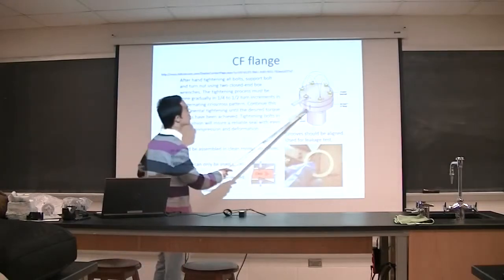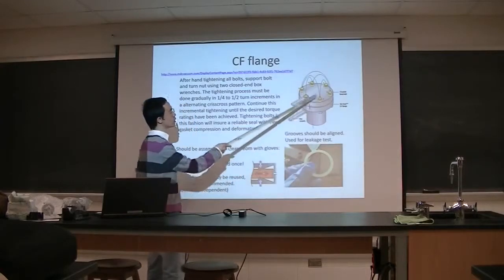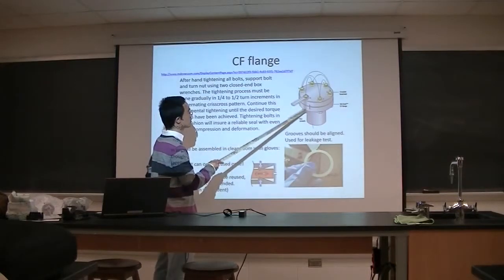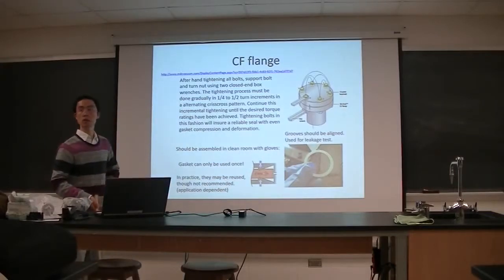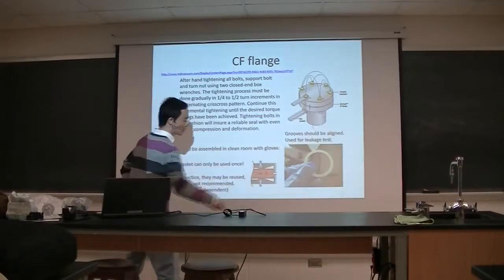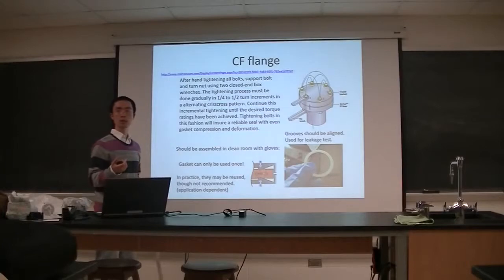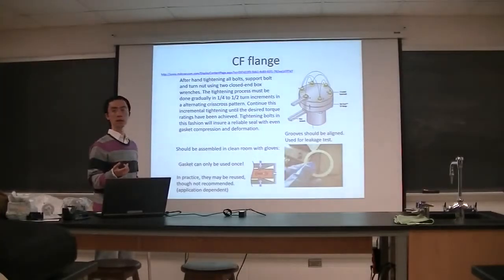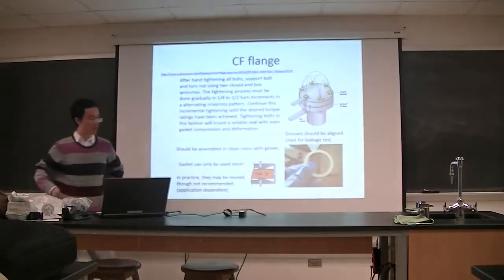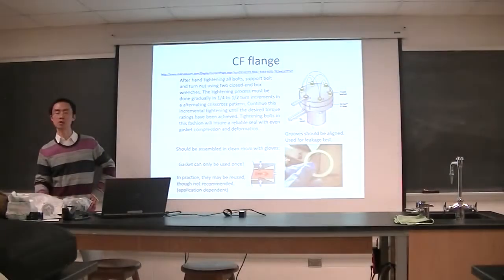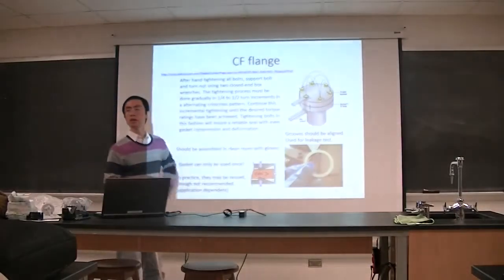There is a small groove on each side of the flange — put them together when you first tighten the screws. This groove is used to test for leakage of the whole chamber. Normally, you use a leak test gas such as helium: spray some helium near a suspected area and see if the leak detector picks it up. This way you can identify which part of the chamber has a leak.